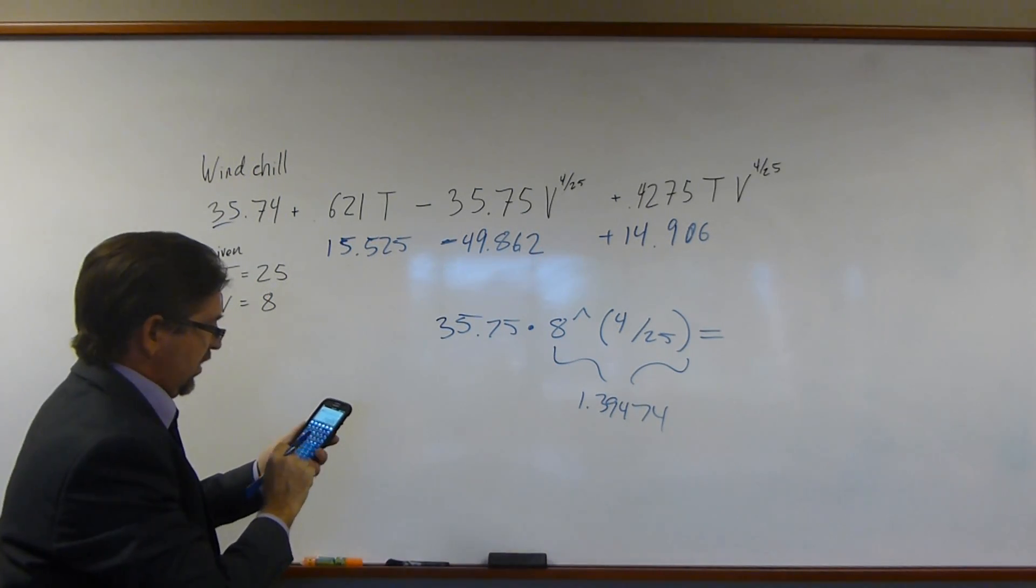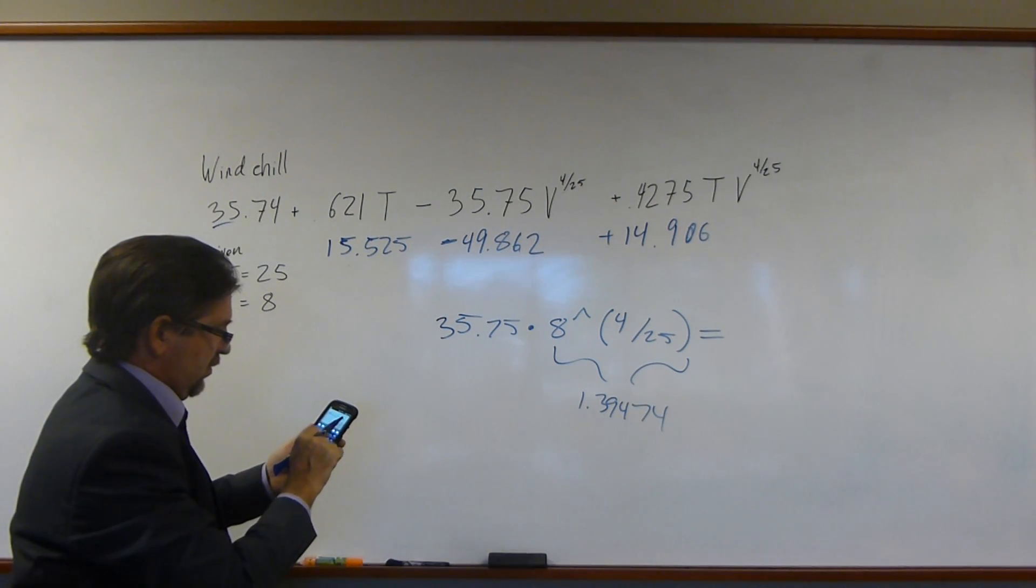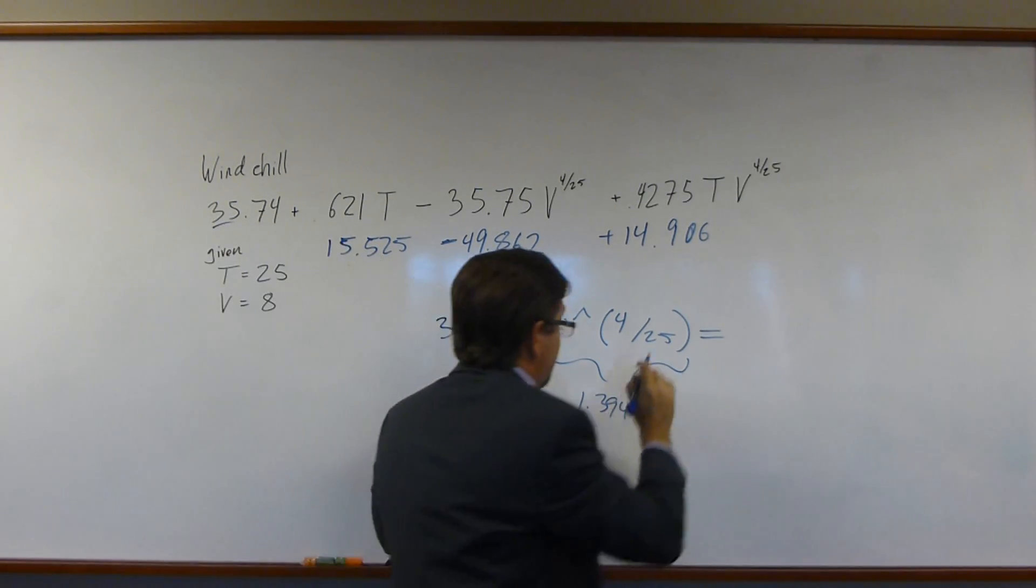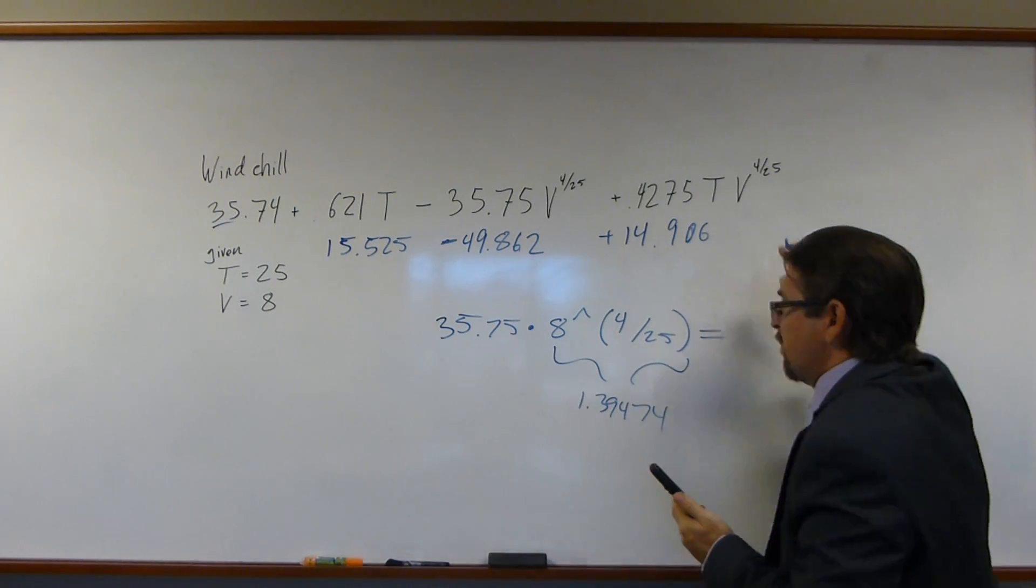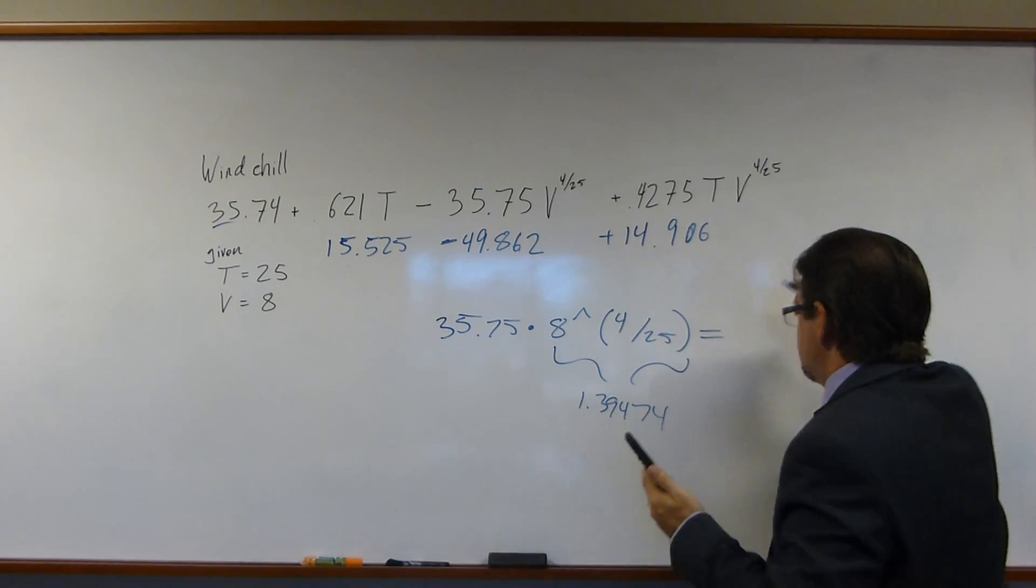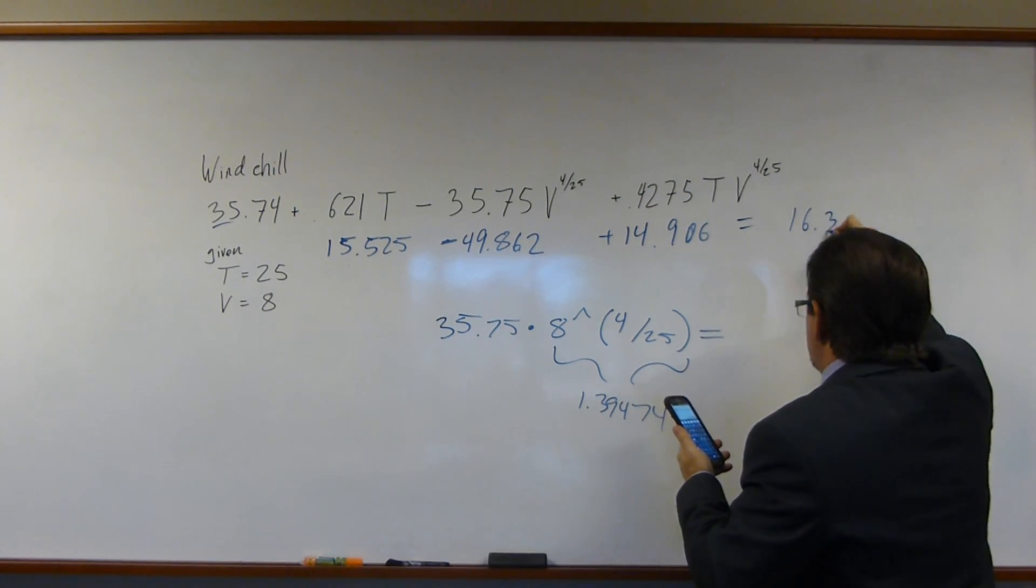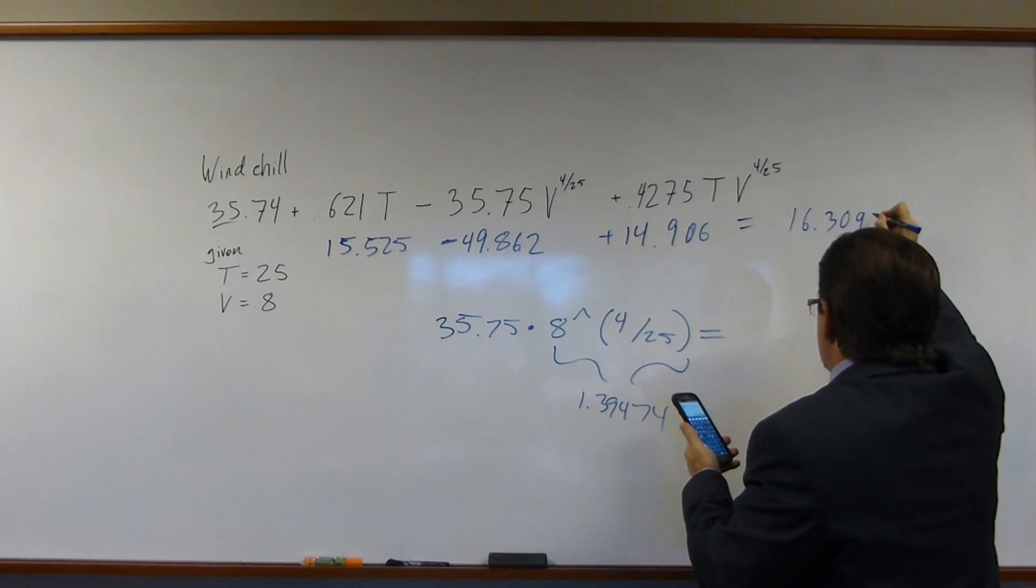So, I get 35.74, add that, subtract that one, add that one. Add these four numbers up. We can all add four numbers. We can do that. And we get 16.3092.